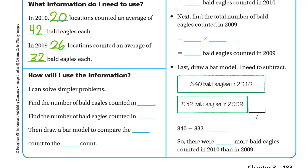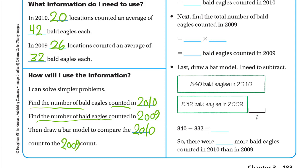How will I use the information? We'll solve simpler problems: find the number of bald eagles counted in 2010 by multiplying 20 by 42, find the number in 2009 by multiplying 26 by 32, then draw a model to compare the 2010 count to the 2009 count.